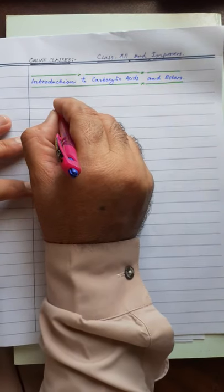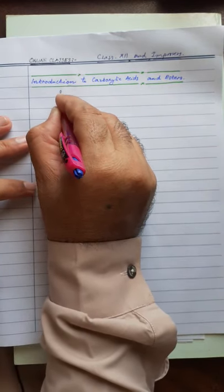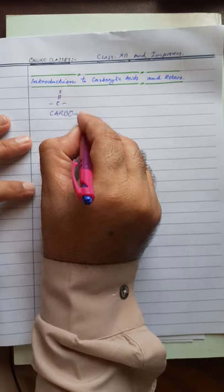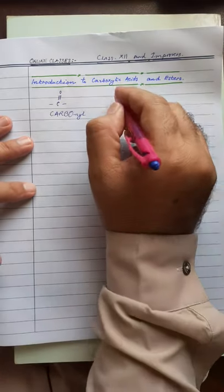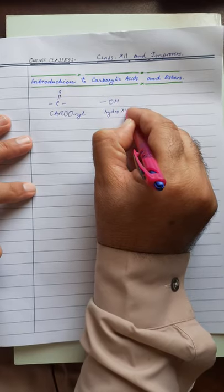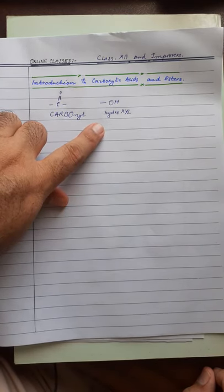First of all, I know that many of you are very familiar with this group. You have seen this group in aldehydes and also in ketones. This group is called CARBONYL — C-A-R-B-O-N-I-L. I wrote CARBO in capital and NIL in small letters, and you will soon know why. You are also familiar with another group OH, which is called hydroxyl.